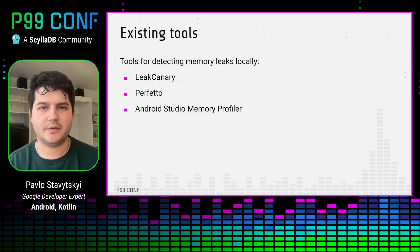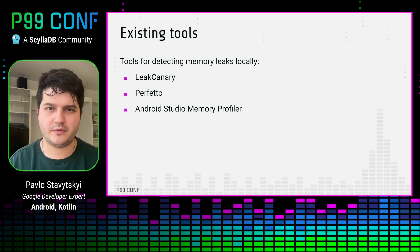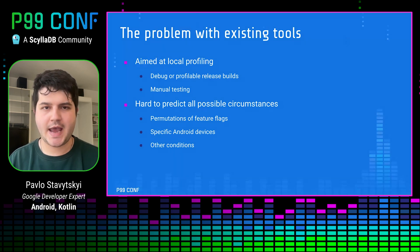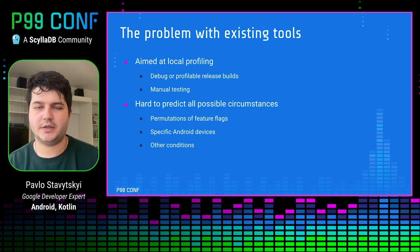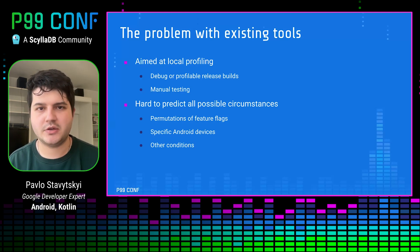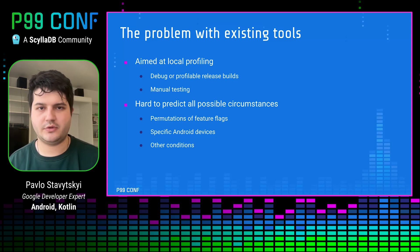There are a lot of existing tools that help work with this problem and detect memory leaks. These are great tools like LeakCanary, which helps identify memory leaks in debug builds while you're using the app. Also, there are good profilers like Perfetto or Android Studio Memory Profiler that give you so much information about different aspects of performance. However, they have one common problem: they are aimed at local profiling. So usually when you have a debug build or a profilable release build, you can use them to identify performance, but because those are not production builds, you will need to use them locally and perform some manual testing.